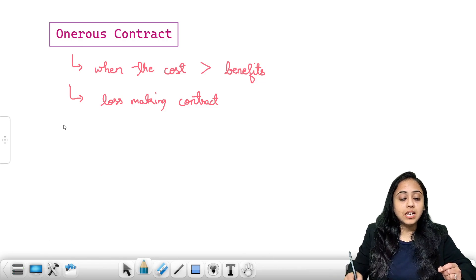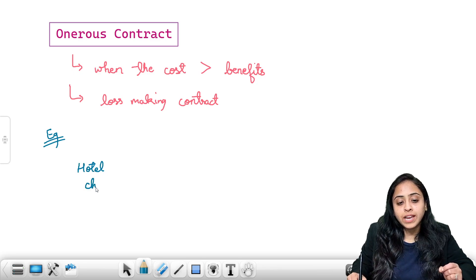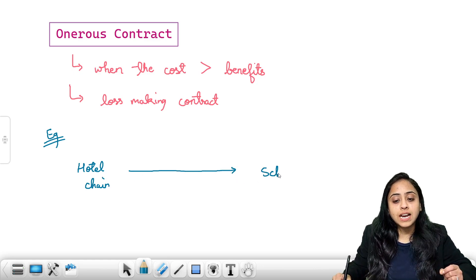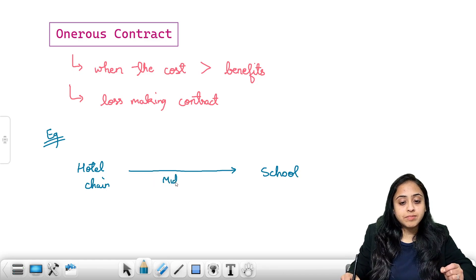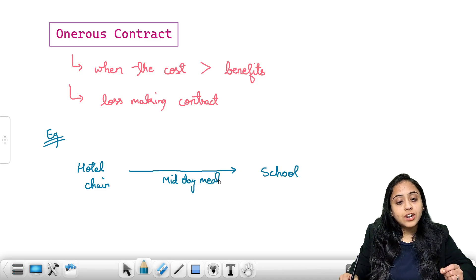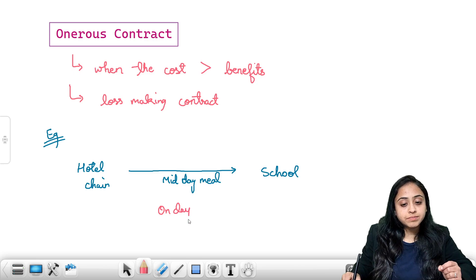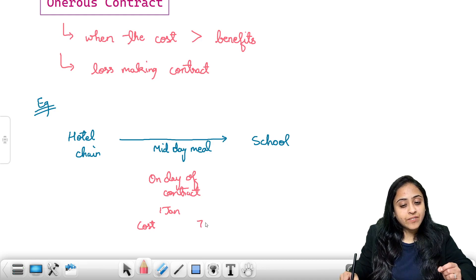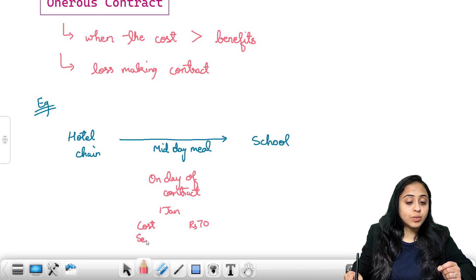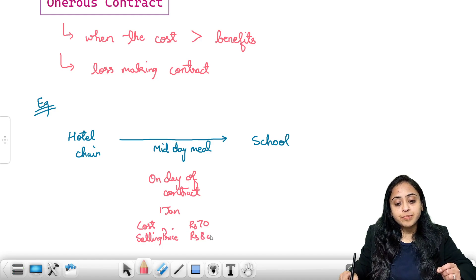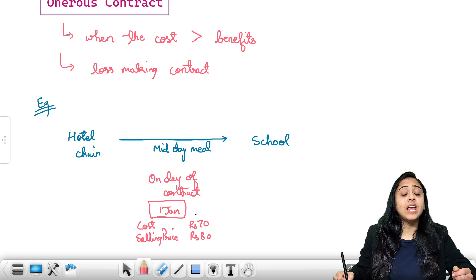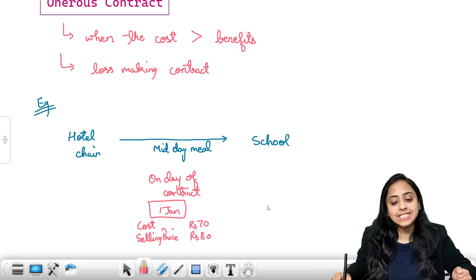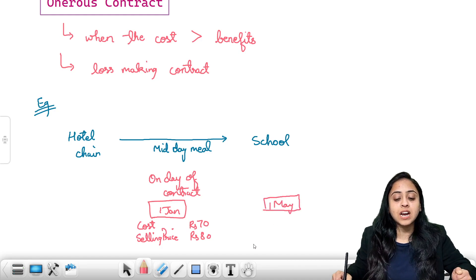Let's understand with an example. Say you are a hotel chain or a restaurant and you have taken up a deal with a school to supply midday meals. On the day of the contract, let's say on 1st January, the costing was only 70 rupees per meal whereas the selling price agreed upon was 80 rupees. The contract was to start from 1st May when the new academic session begins.